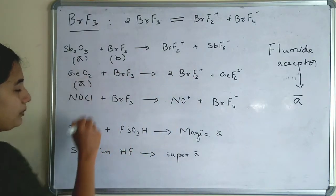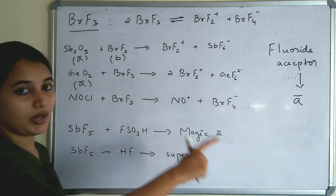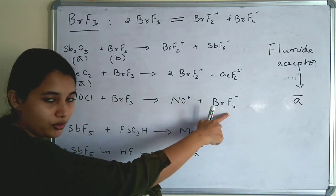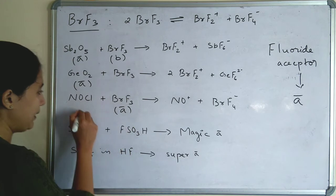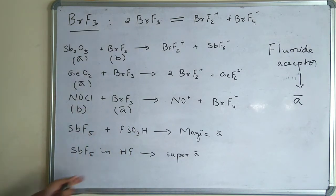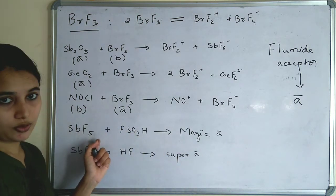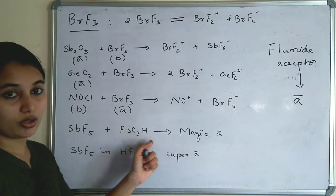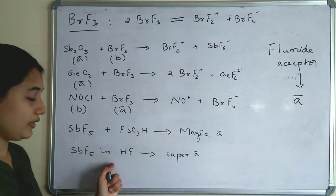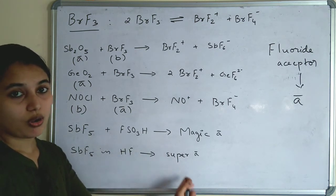NOCl + BrF3 → NO⁺ + BrF4⁻. Here BrF3 is accepting fluoride, so BrF3 acts as the acid and NOCl is the base. Magic acid is SbF5 + FSO3H (antimony pentafluoride in fluorosulfuric acid). A stronger super acid is SbF5 in HF.